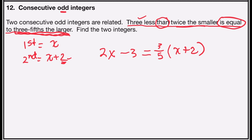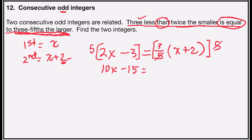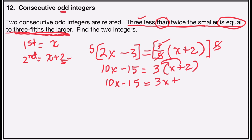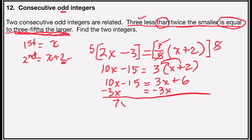Now I'll solve the equation. Since I have a fraction, the first thing I'm going to do is multiply both sides by the least common denominator, which in this case is five. Five times 2x is 10x. Five times negative three is negative 15. Five divides into five once, and one times three is three times x plus two. Now I'll simplify the right side using the distributive property: three times x is 3x, and three times two is six. Now I'll gather my variables on one side — subtract 3x from both sides to keep my variable term positive.